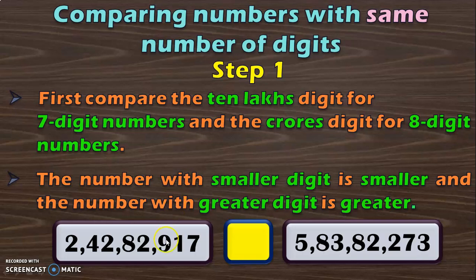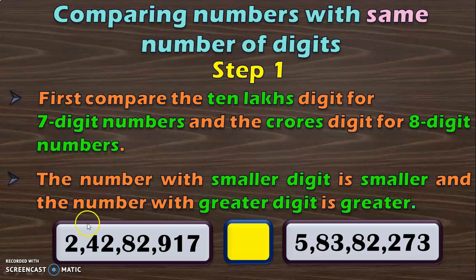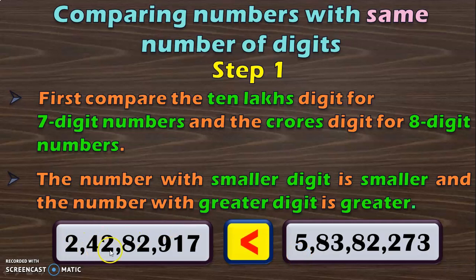So I have considered here two 8 digit numbers, so let us see the place values for a quick revision: ones, tens, hundreds, thousand, ten thousands, lakh, ten lakh, and crore. For an 8 digit number, you should start your comparison with the crore's place value. Here you have 2, and the other 8 digit number has a 5 in the crore's place value. We know that 2 is lesser than 5. With that you conclude 2 crore 42 lakh 82,917 is lesser than 5 crore 83 lakh 82,273.